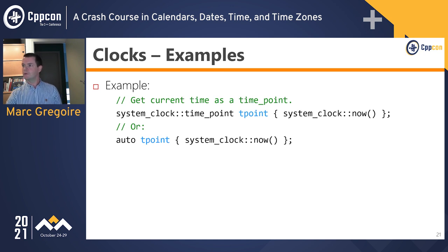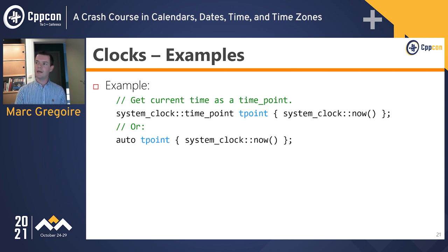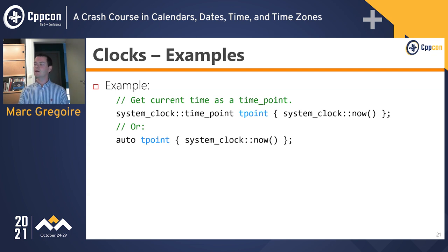Regarding the question about adding a year to February 29 on a leap year — for example February 29, 2020 — it depends on the arithmetic used. With serial-based representation it adds the average year in seconds, so the result would most likely be March 1. With field-based arithmetic, the result would represent an invalid date; the exact behavior would need to be looked up.